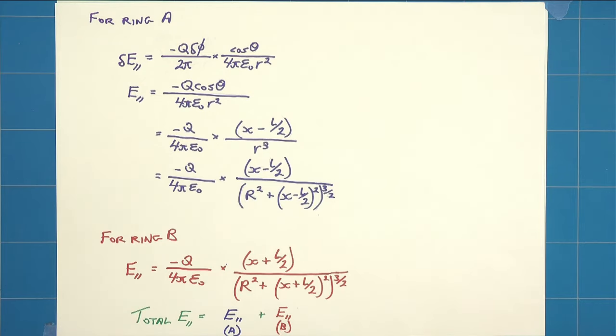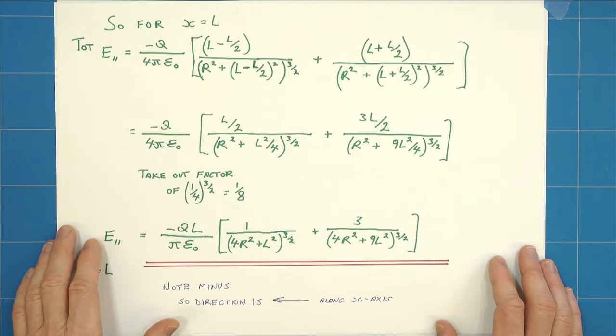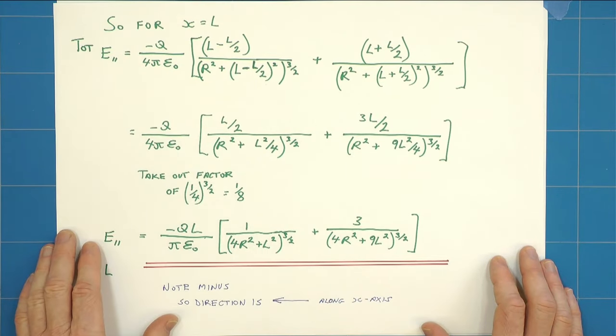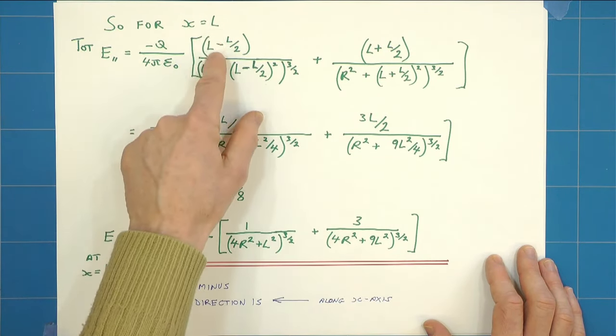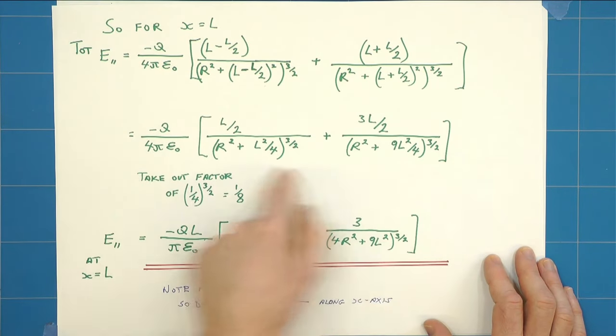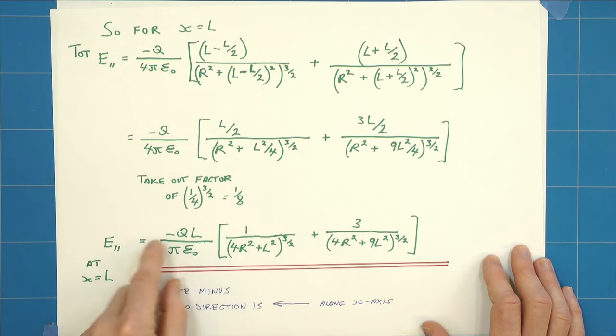So all we need to do now is plug in some values. For x equals 2L, we get this fairly horrible looking expression here, where all I've done is simply put L in place of x all the way through, which simplifies a bit to this.